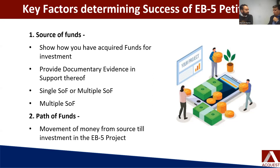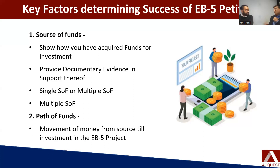Source of funds is the most important thing. Your I-526, your EB-5 petition, is approved based on the source of funds. So your source of funds is what is going to get you to the US in the first place. So why is it so complicated, the source of funds?